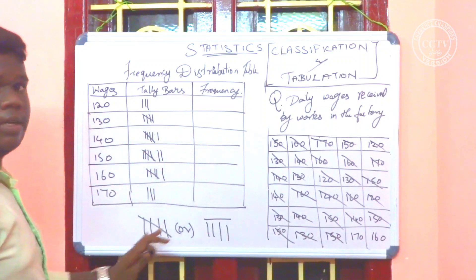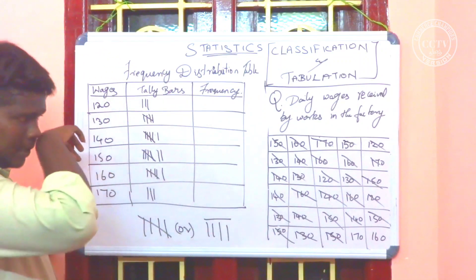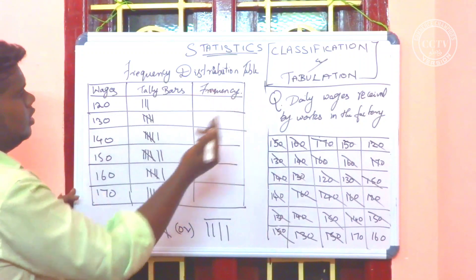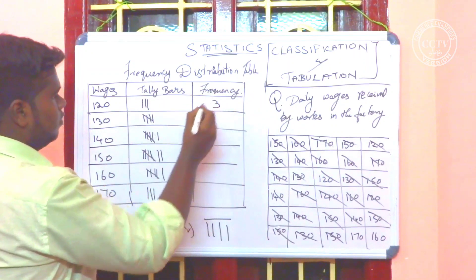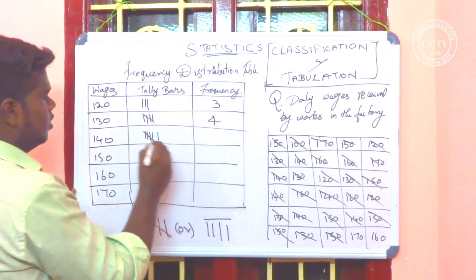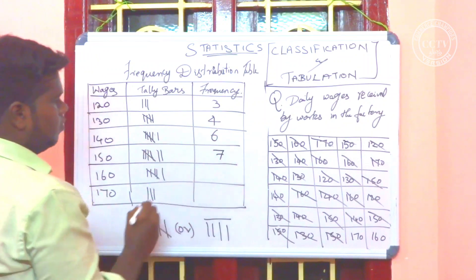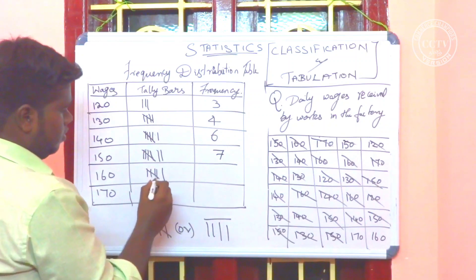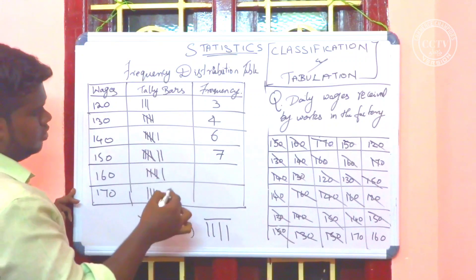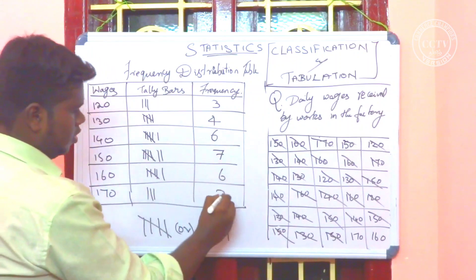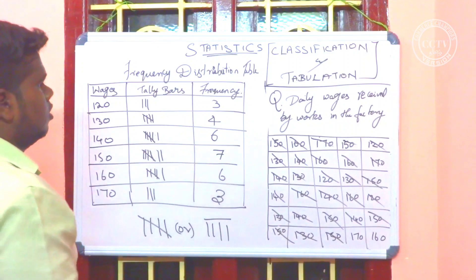The frequency is 3, 4, 6, 7 — that's it. 1, 2, 3, 4, 5 and 1, 6, 6. Frequency — okay, now we have the frequencies for each value.